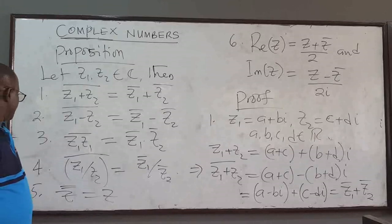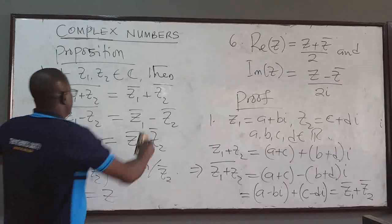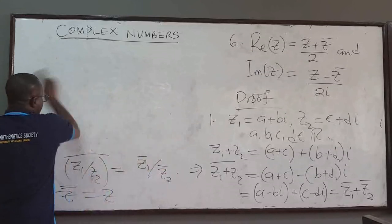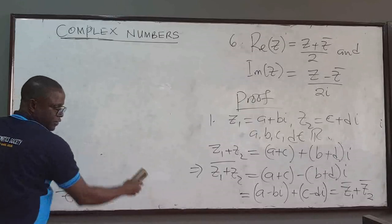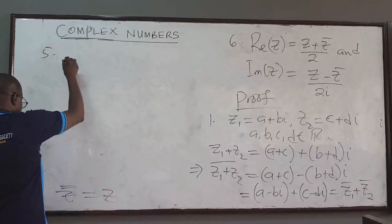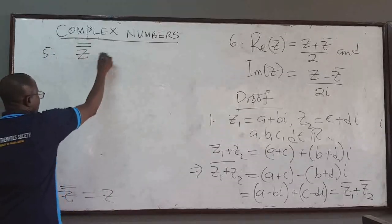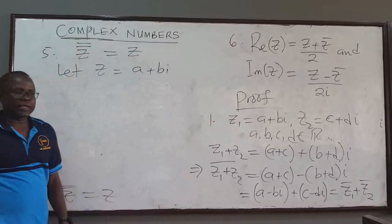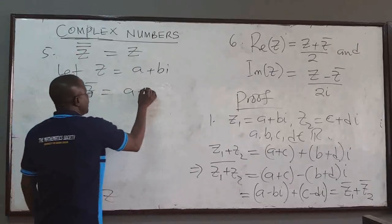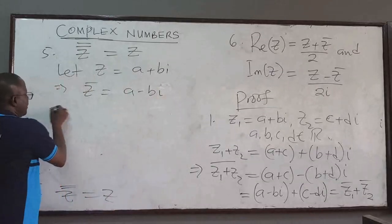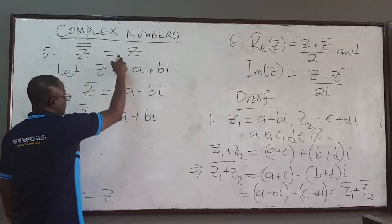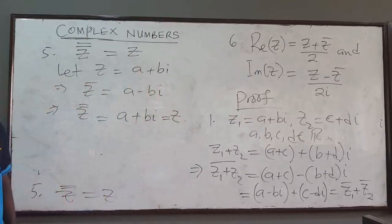So that's the procedure and approach you use to prove properties of complex numbers. You can try the others — I think these ones are in your notes and are straightforward. For proposition 5, the conjugate of the conjugate equals z, which is easy to see. Let z equal a plus bi where a and b are real numbers. Then the conjugate of z is a minus bi. If I take the conjugate again, I negate the imaginary part so it becomes a plus bi — but a plus bi is z. So that's easy to prove.